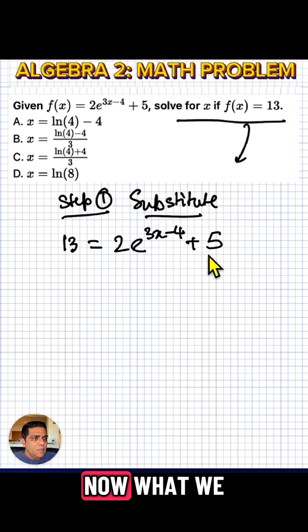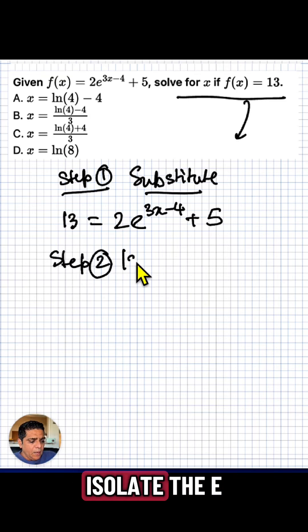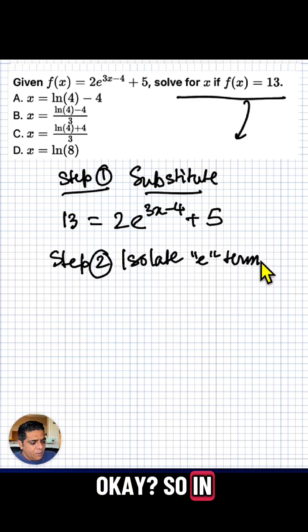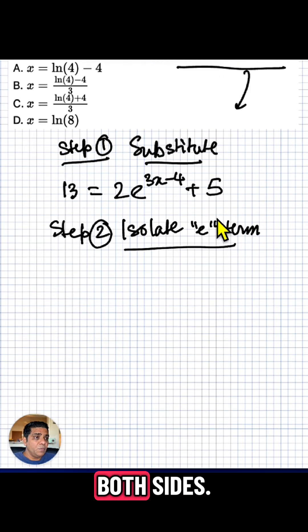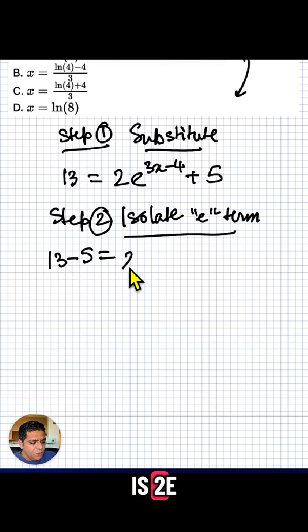Now, step two is isolate the e term. In order to do that, I'm going to subtract 5 from both sides. So we have 13 minus 5 is 2e to the power of 3x minus 4. That equals 8 equals 2e to the power of 3x minus 4.